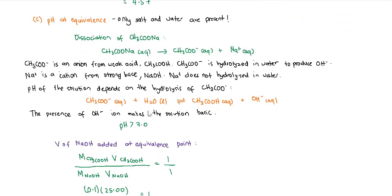Next, pH at equivalence. At equivalence, only salt and water are present — there is no more acid or base. You need to do the dissociation of the salt and then determine which ion is going to hydrolyze in water, because the pH depends on the ion that hydrolyzes. In this case, CH₃CO⁻ hydrolyzes in water to produce OH⁻. So the pH at equivalence for weak acid and strong base titration is greater than 7.